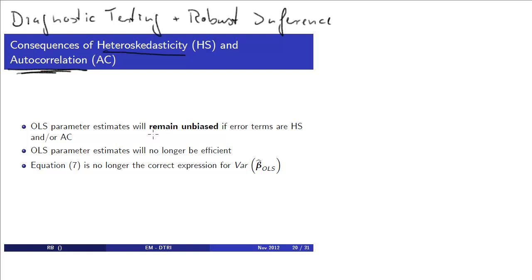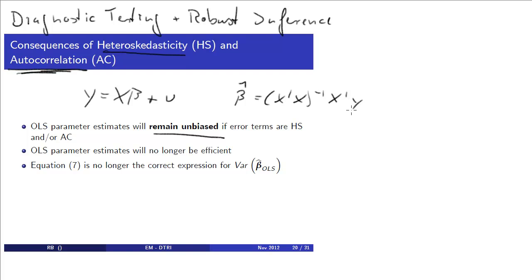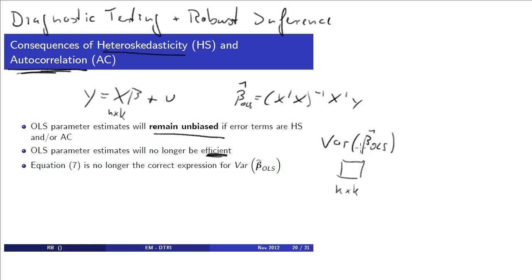We mentioned in the lecture that our OLS parameter estimates will remain unbiased. The OLS parameter estimate is the well-known (X'X)⁻¹X'y. So that β̂ will remain unbiased, but it will no longer be efficient. That means the variance of β̂ OLS — remember this is a k-by-k matrix — is going to be larger than some other estimate, which will produce a smaller variance. So β̂ OLS is no longer efficient.